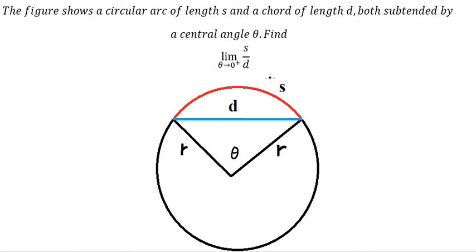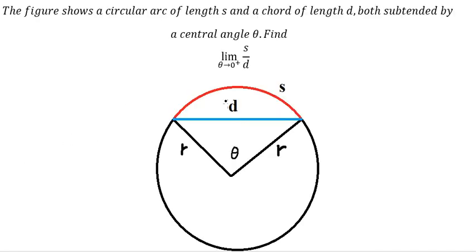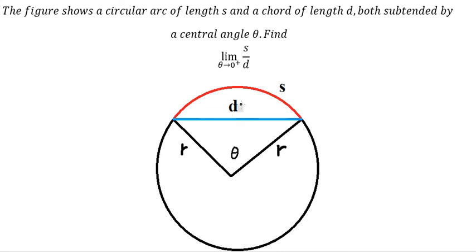The first thing we need to find is h and d in terms of theta and radius r. We know that h, shown by the red line, has the formula: h equals theta over 2 multiplied by 2r. This is the formula to find h.